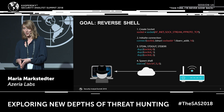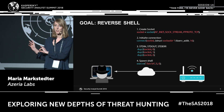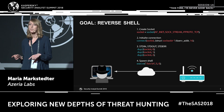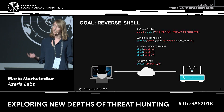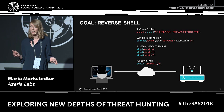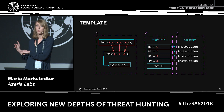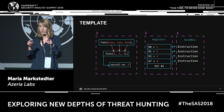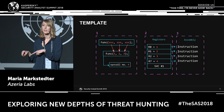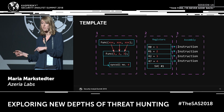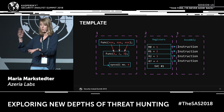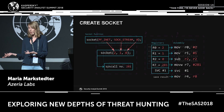We will write a reverse shell. In blue you see the system functions that we will translate and represent in assembly, and in red you see the arguments that we will pass to these functions via registers. We will cover socket, connect, dup2, and execv. This is a template to understand how a function is represented in assembly: on the left you see the function, its arguments, and the syscall number; in the middle the registers and arguments; on the right the instructions needed to pass the arguments into the registers.